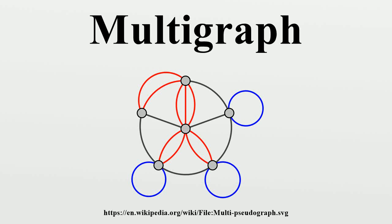In mathematics, and more specifically in graph theory, a multigraph is a graph which is permitted to have multiple edges, that is, edges that have the same end nodes. Thus two vertices may be connected by more than one edge.